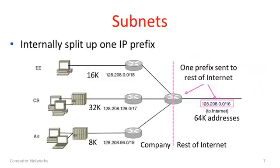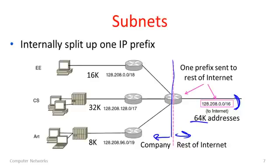Let's see an example of how this would work. Here, externally, maybe this is a company — the line is dividing it, with the company on this side and the rest of the internet on the other. From the ISP, the company has acquired this IP prefix 128.208.0.0/16 for all of its computers. It's a slash 16, so it has 64k different addresses. Internally, it might want to divide that into different structures, because often there is structure inside an organization. Here it's a university with EECS and art departments. Internally, they could divide the slash 16 up into a slash 17, a slash 18, and a slash 19.